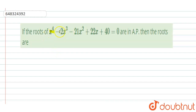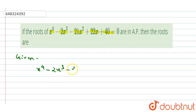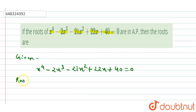Hello everyone. Our question is: if the roots of x⁴ - 2x³ - 21x² + 22x + 40 = 0 are in AP, then find the roots. The given equation is x⁴ - 2x³ - 21x² + 22x + 40 = 0, and it is given that the roots are in AP.